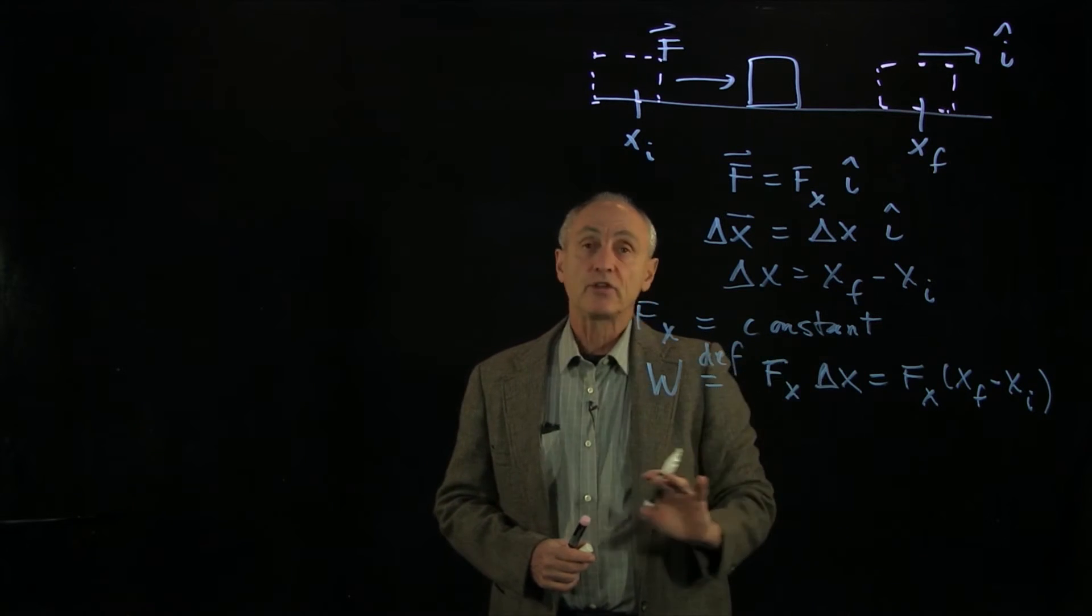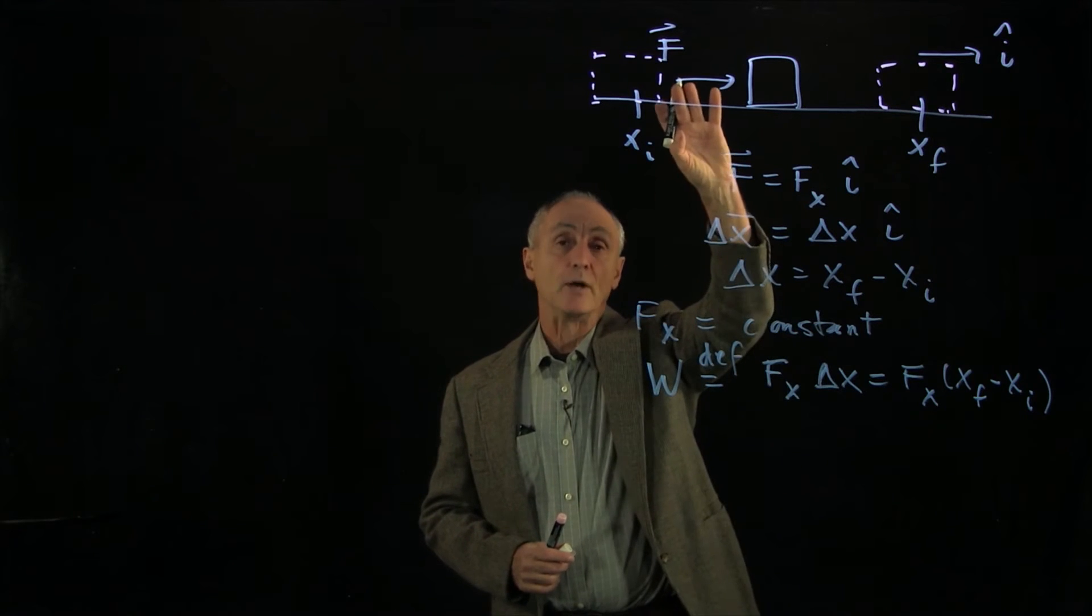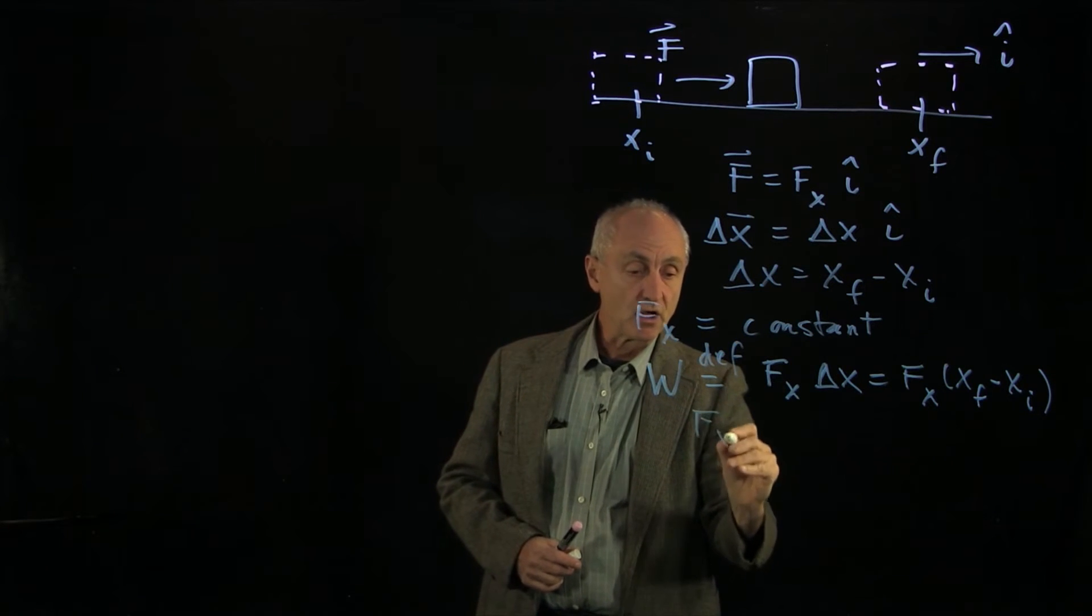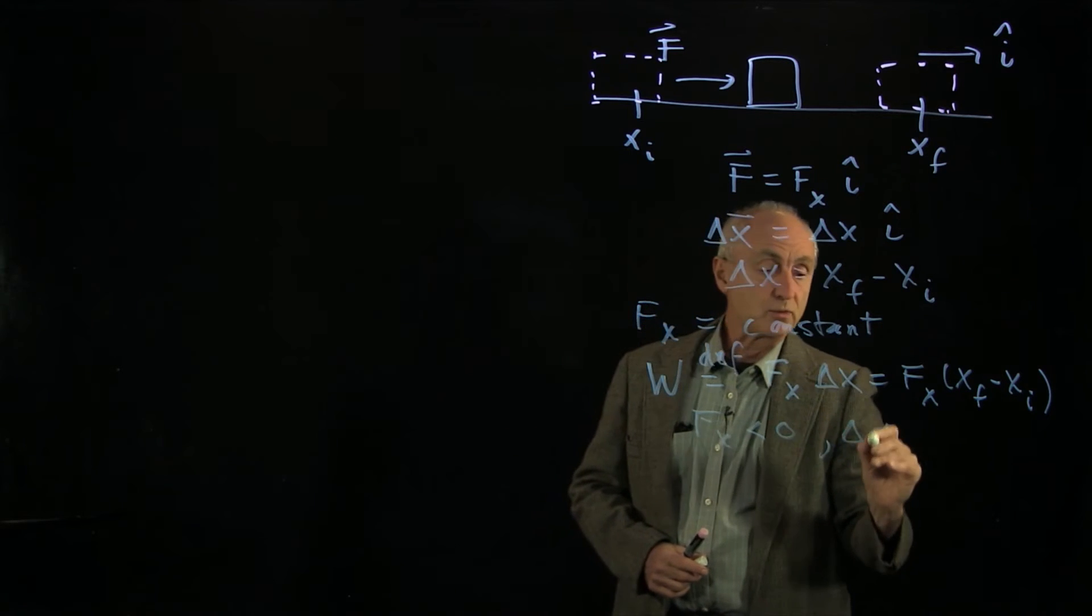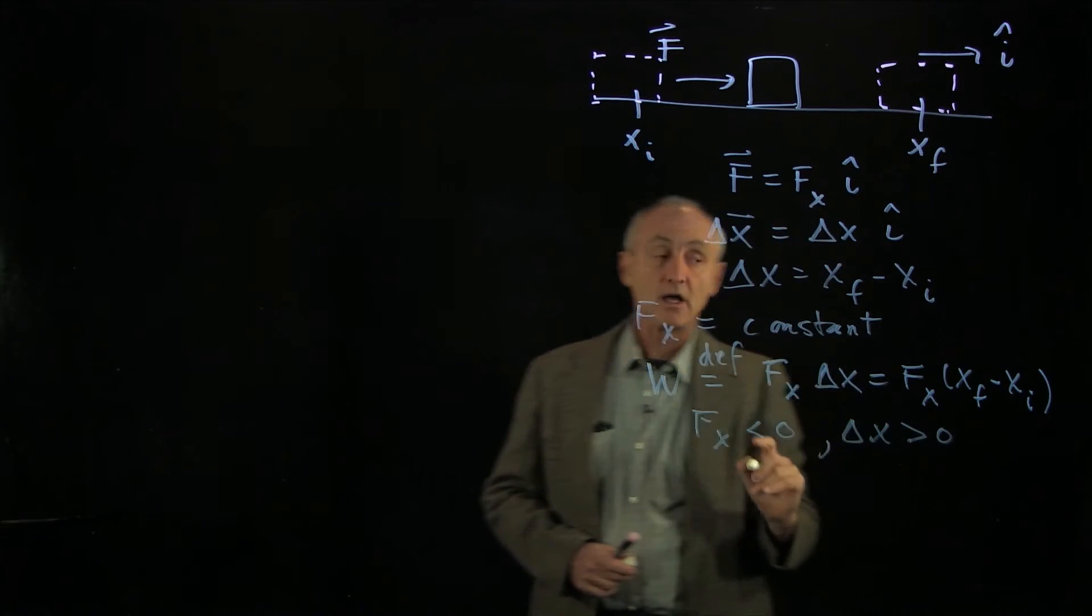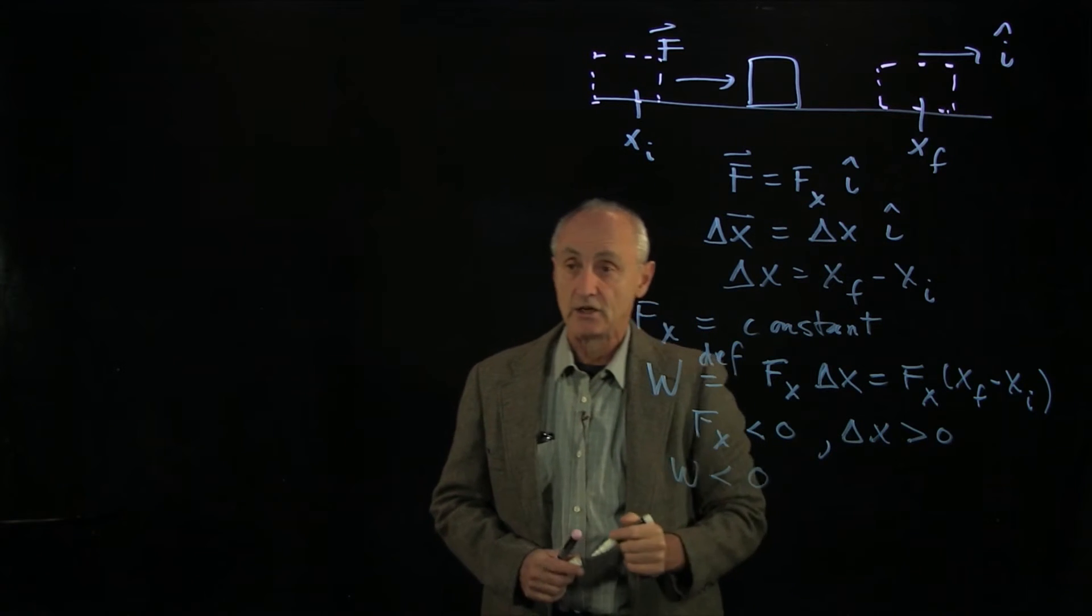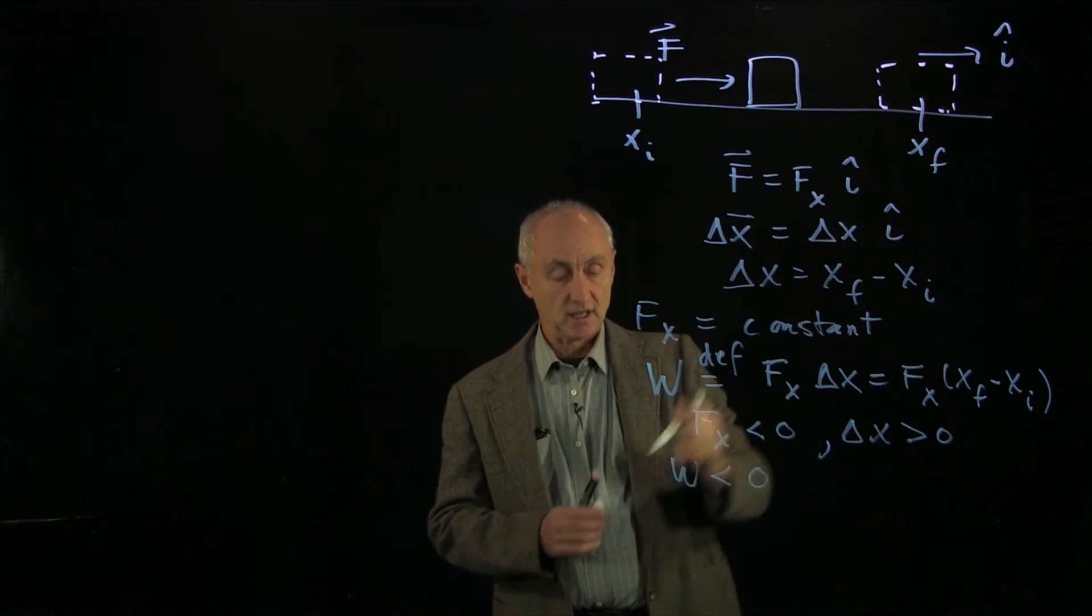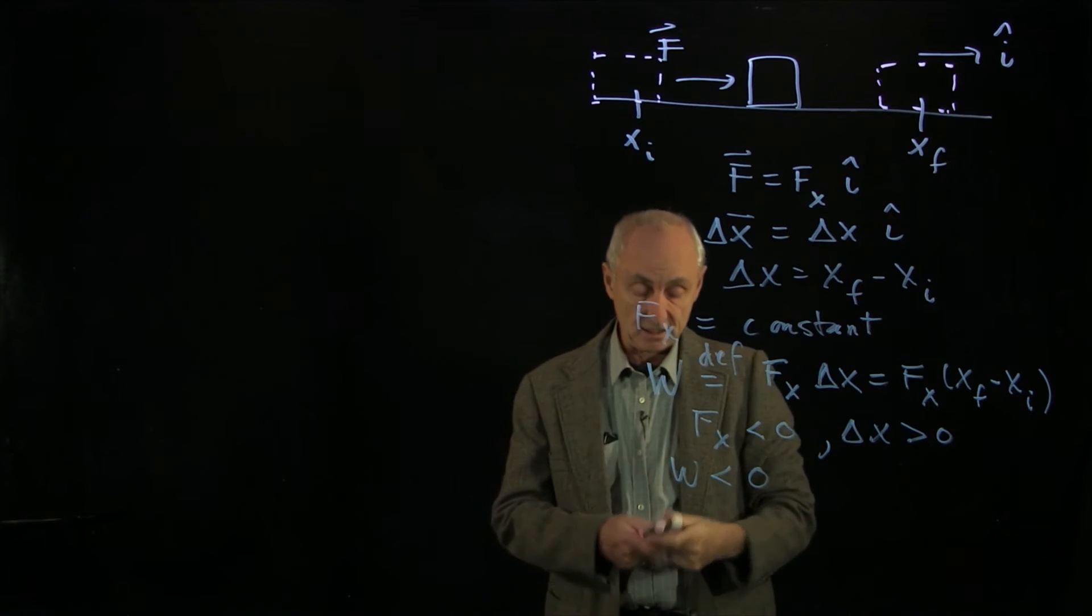Now if we look at this, our force may, in our diagram we drew it in the positive x direction. But if our force fx were less than 0 and our displacement was in the positive direction, then you can see that the work is negative. So if the force is opposing the displacement, and that's what would happen if fx was pointing in the negative direction, the work would be negative.